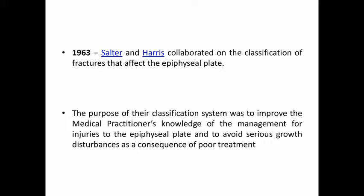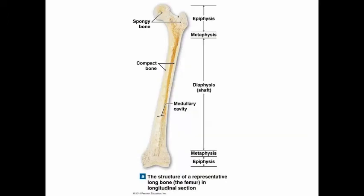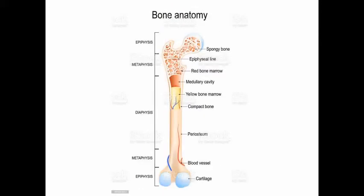Before going to the classification, let's see the anatomy of a normal bone. Here you can see the spongy bone and compact bone. The shaft of the bone is called the diaphysis, and the proximal and distal ends are called the epiphysis. The diaphysis and epiphysis are connected by a portion called the metaphysis, and between the epiphysis and metaphysis there is the growth plate, or epiphysial plate, or physis.